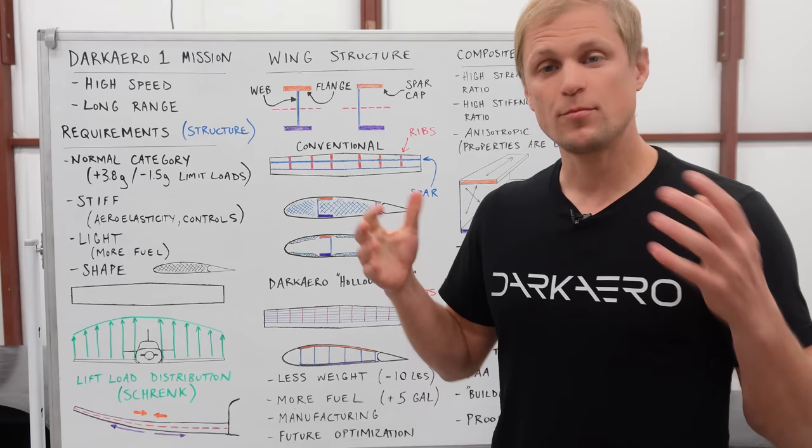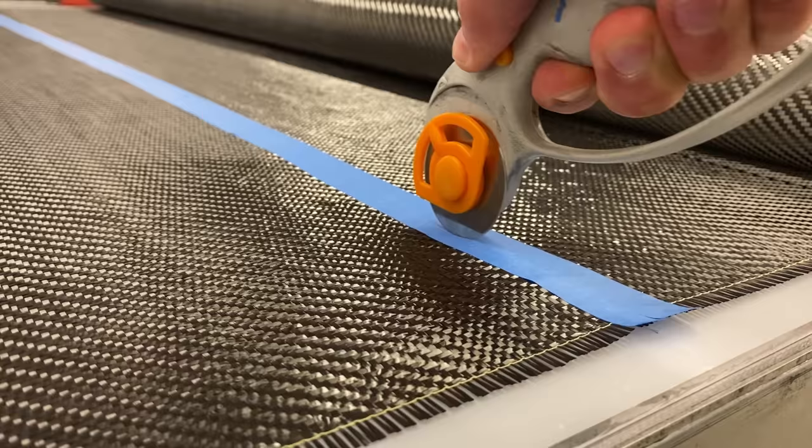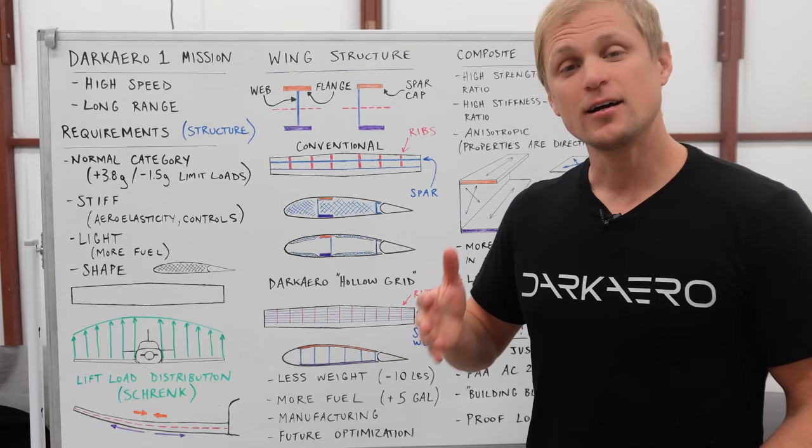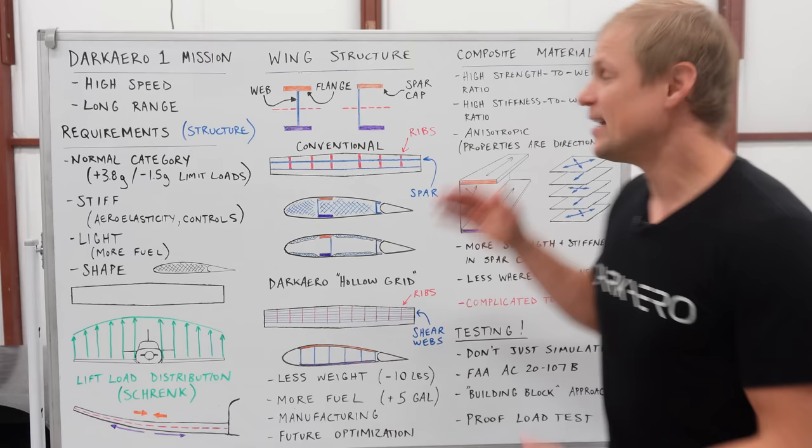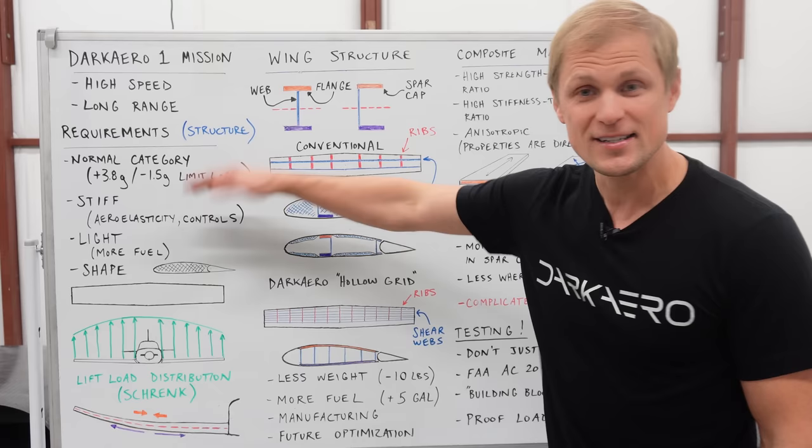Part of what enabled this design approach was the use of composite materials, specifically carbon fiber composite. Carbon has some interesting mechanical properties that are advantageous to achieving the goals that we're trying to meet here. It has a high strength-to-weight ratio and a high stiffness-to-weight ratio that allows us to make structures that are strong, stiff, and light all at the same time.